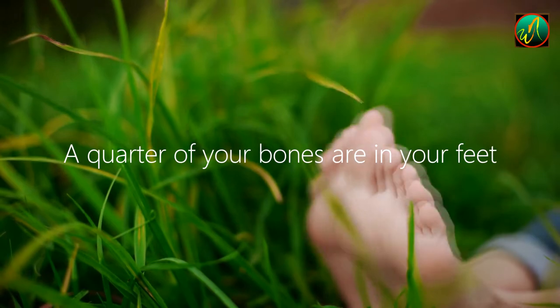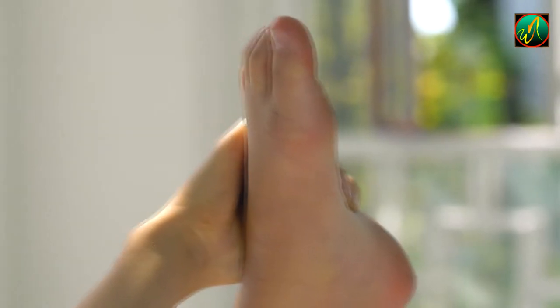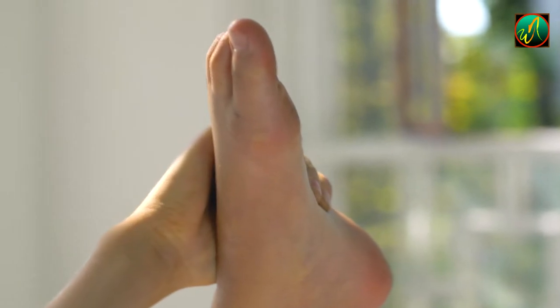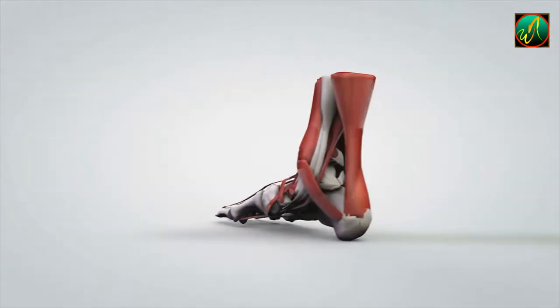A quarter of your bones are in your feet. The human foot contains 52 bones, with 26 bones in each foot. More than a quarter of the bones in your entire body are represented by this figure. Each one also has 33 joints as well as more than 100 muscles, tendons, and ligaments to keep it all together.